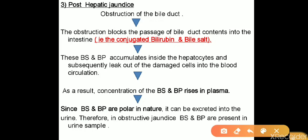In post-hepatic jaundice, obstruction of the bile duct blocks the passage of bile duct contents — conjugated bilirubin and bile salts — into the intestine. Due to back pressure, these contents reach back to the hepatocyte, which is surrounded by multiple capillaries. Due to this back pressure effect, bile salts and bile pigments are secreted into the surrounding capillaries, enter systemic circulation, reach the kidney, and are excreted through urine. So a patient with obstructive jaundice will have bile salts and bile pigment in urine.